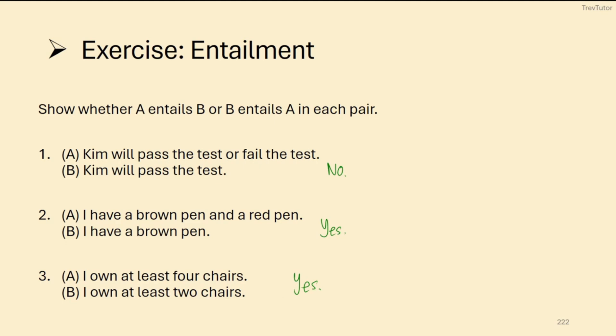So we could be a little bit more specific with these tests, so I can show the first one with the contradiction test. So we're going to take the first sentence, which is Kim will pass the test or fail the test, and Kim will not pass the test.